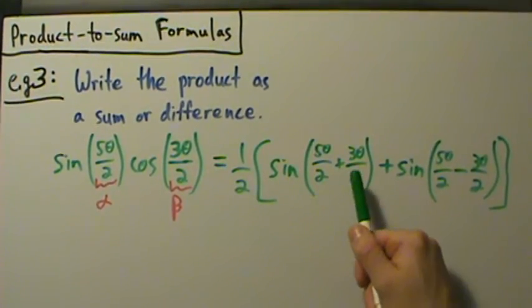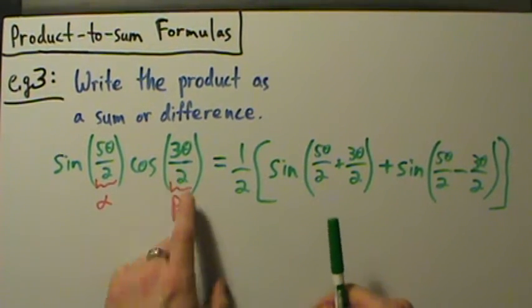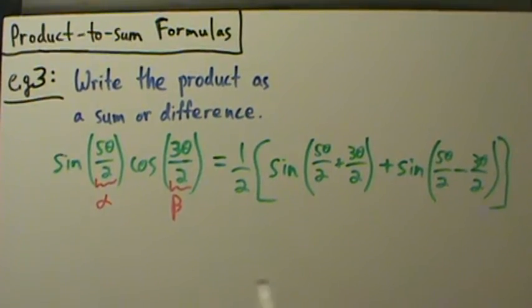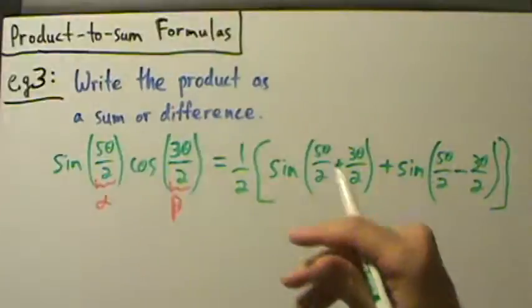So that's α plus β. Remember, α is 5θ over 2, β is 3θ over 2, so this is α plus β. And then that's α minus β, just directly from the formula here for this third product-to-sum formula right there.